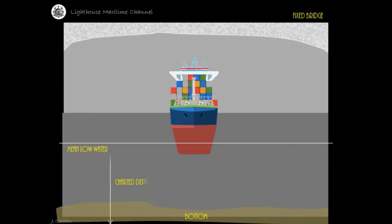Charted depth is measured from the Mean Low Water to the bottom of the ocean. Mean High Water is the basis for the measurement of charted heights of objects above the water and vertical clearances under structures such as bridges and power lines.